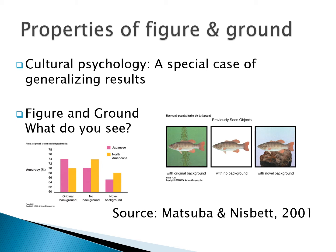They're asking: was this fish in the scene you saw before? They showed it with the original background, with a white background, and then in a novel background. For Japanese people, they are doing better than North American people when the fish is on the same background, but that trend flips. With no background and with a novel background, Japanese people are doing worse — suggesting they see and remember the figure and ground as a more holistic experience than we do.